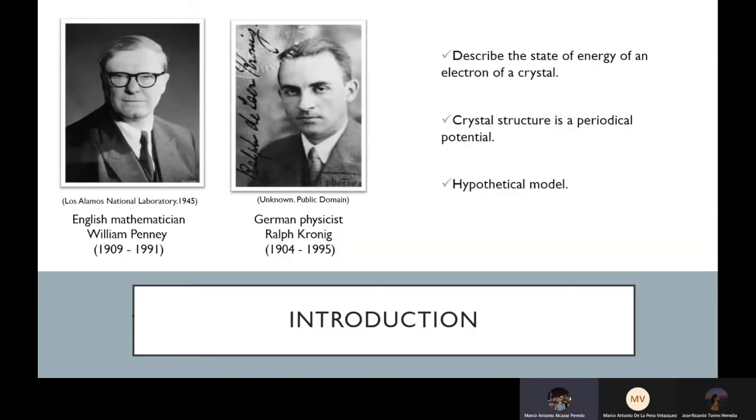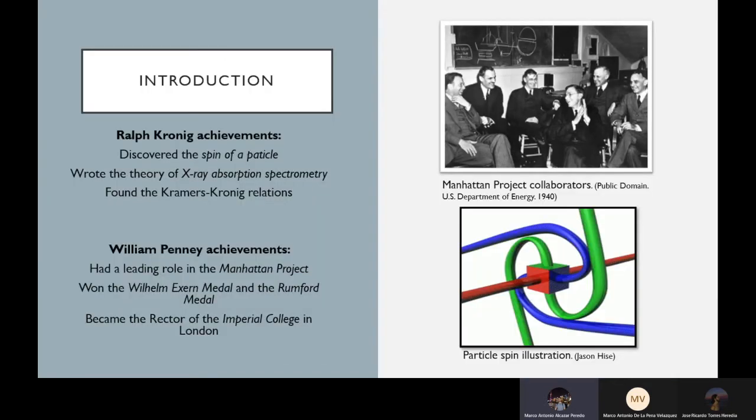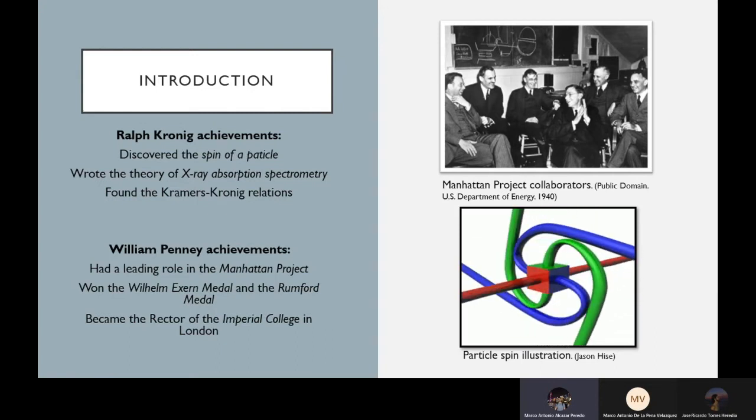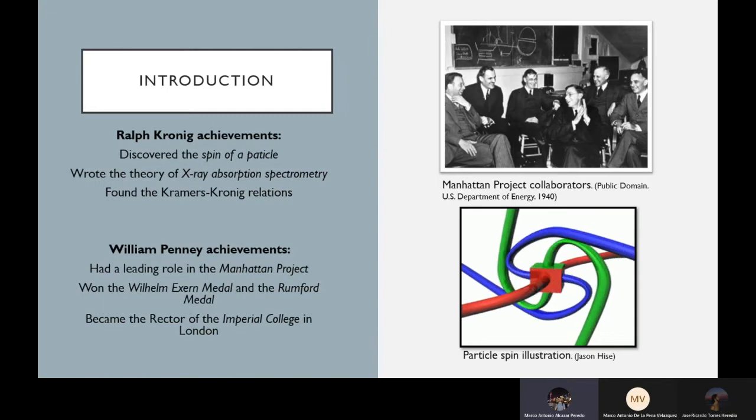In solid state physics, the Kronig-Penney model describes the energy of an electron inside a crystal. It was developed by these two scientists called Kronig, Ralph Kronig and William Penney. This model supposes that the crystal structure is a periodical potential, judging it abruptly. And even though this model is hypothetical, it helps a lot in calculations.